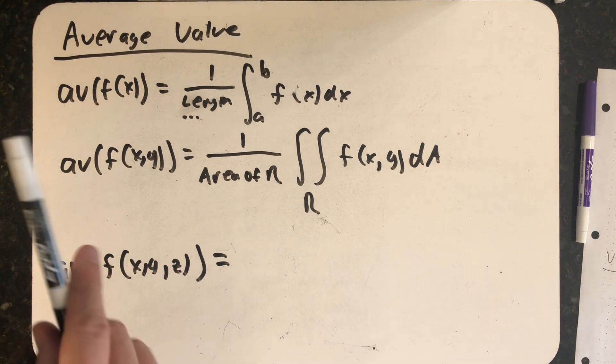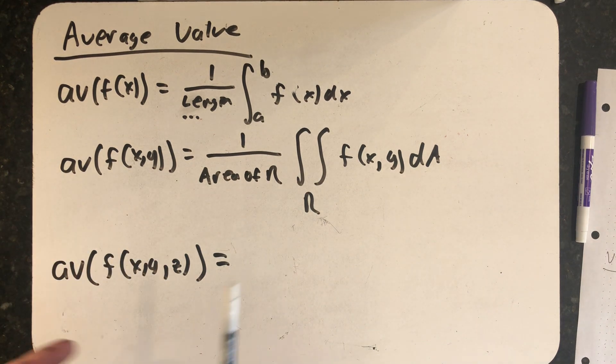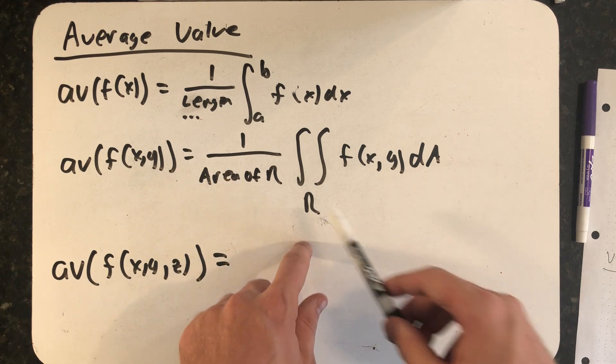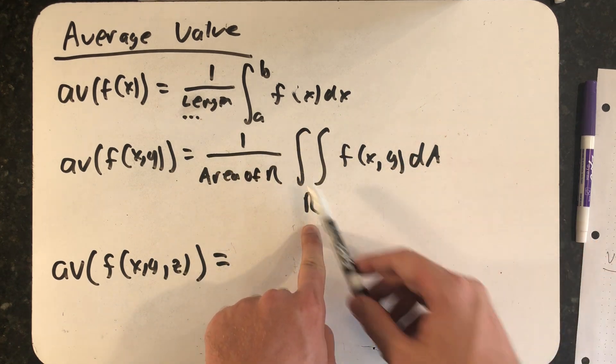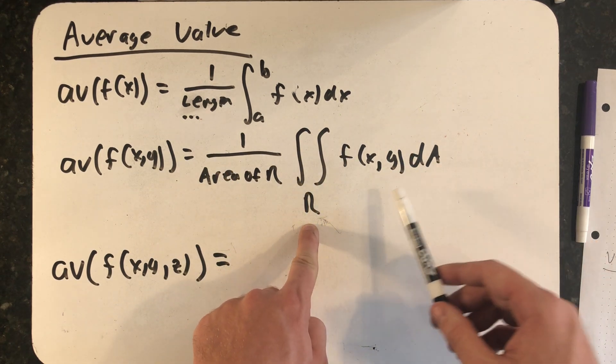1 times dx I just get that length. And so now the average of f of x, y for a function on two variables, well I take the double integral over the region R of f of x, y dA and I divide out the area of the region R.